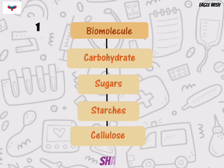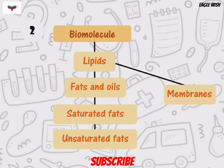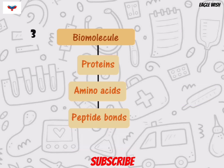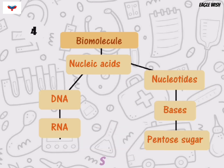Carbohydrate is found in sugars, starches, and cellulose. Lipids are found in fats, oils, saturated fats, unsaturated fats, and cell membrane. Protein is found in amino acids and peptide bonds. Meanwhile, nucleic acid is found in DNA and RNA.